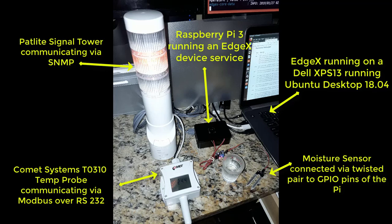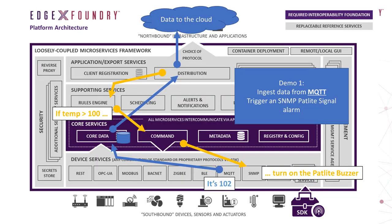Connected to EdgeX I have an SNMP protocol pat light signal tower. This device provides a means to visually see EdgeX perform sensor data detection and actuation. I also have a Modbus Comment Systems thermostat reporting temperature to EdgeX via RS-232. Not shown on screen, I also have EdgeX connected to an MQTT topic for receiving temperature data from an anonymous device. Finally, I have a simple moisture sensor connected to my Raspberry Pi 3 via its GPIO pins.